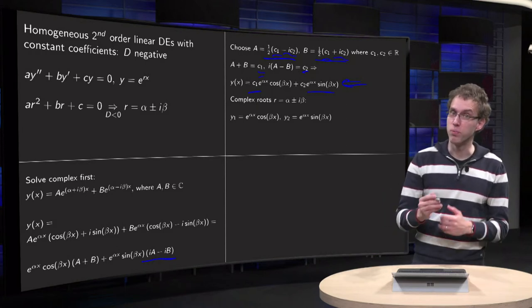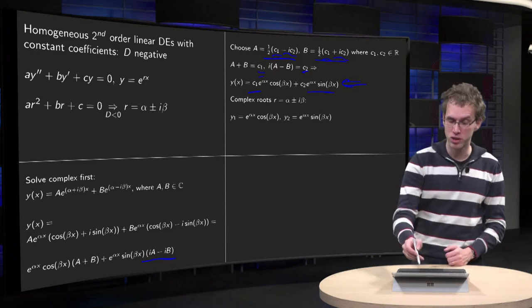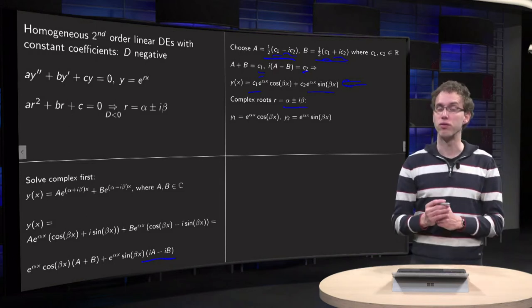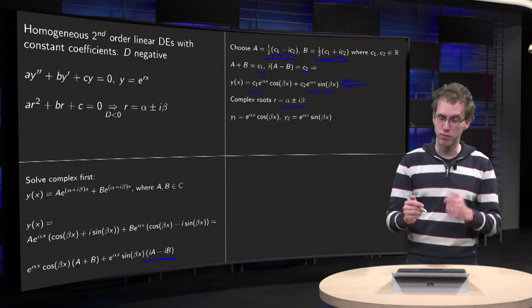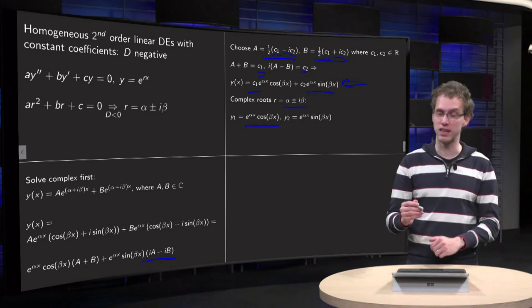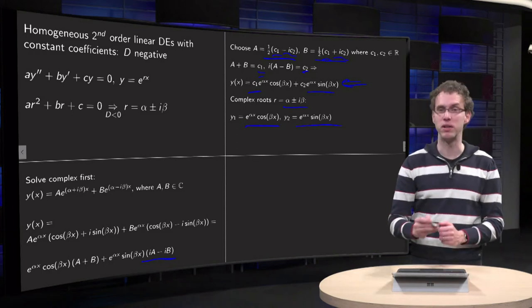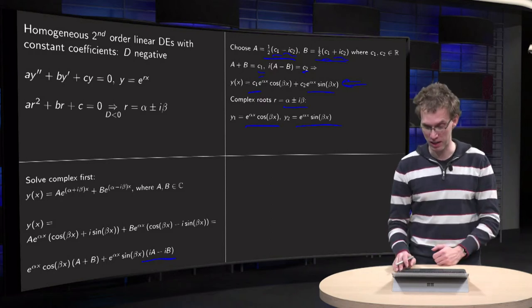So in particular what will be the y₁ and y₂? What will be your independent solutions? If your r is of the form α ± iβ, your first independent solution equals e^(αx)·cos(βx), and the second independent solution equals e^(αx)·sin(βx).